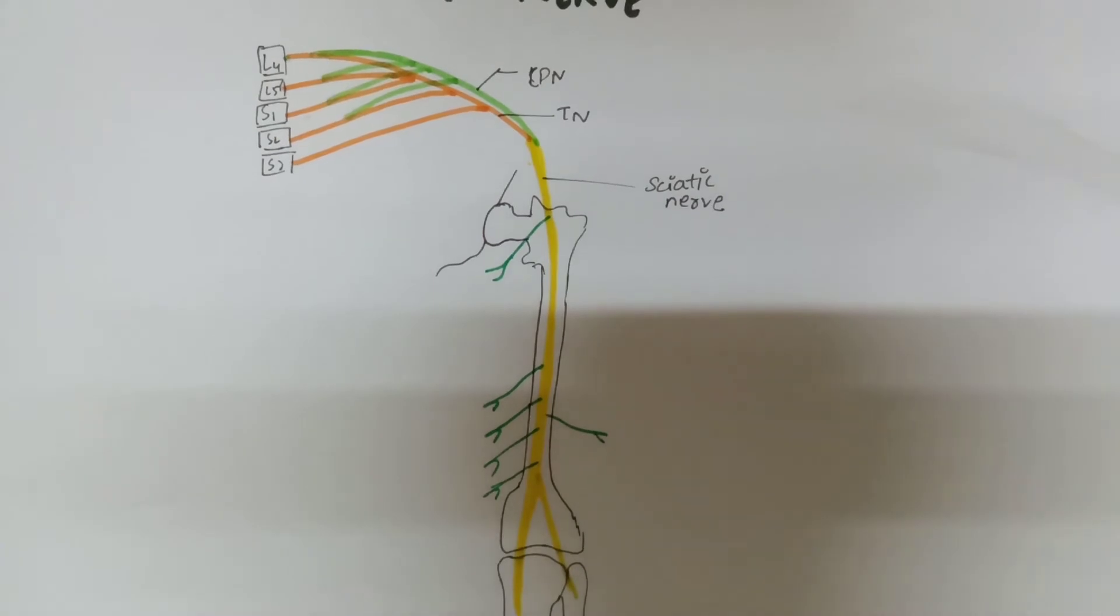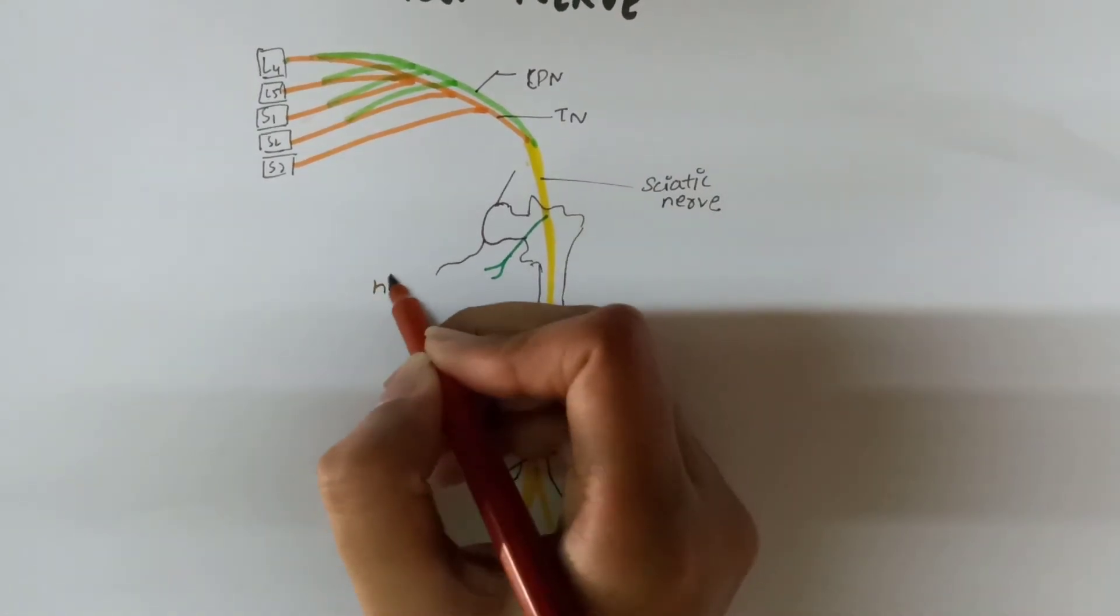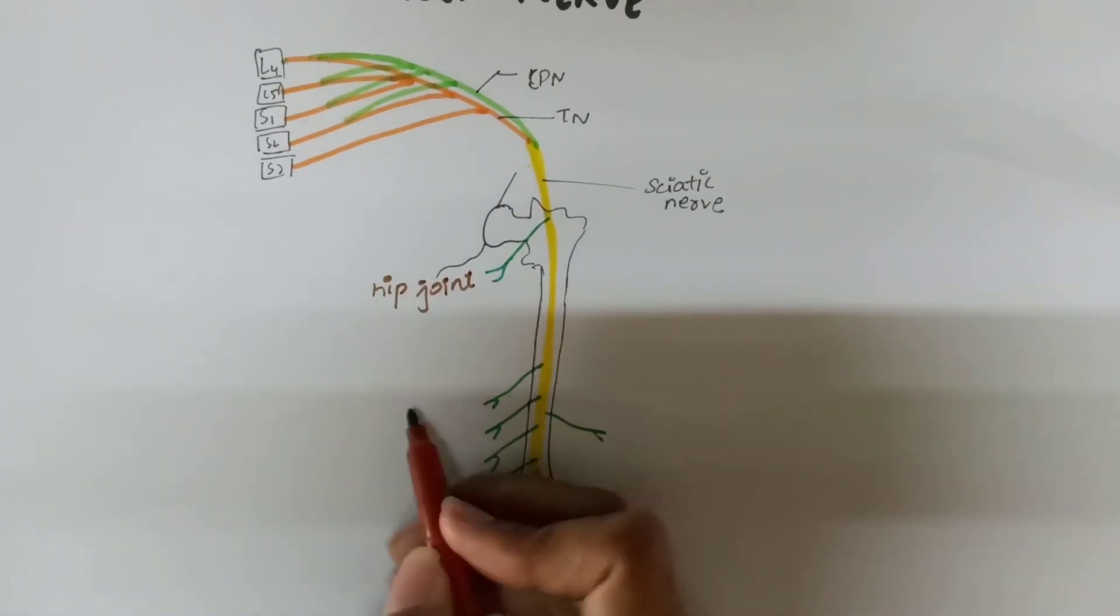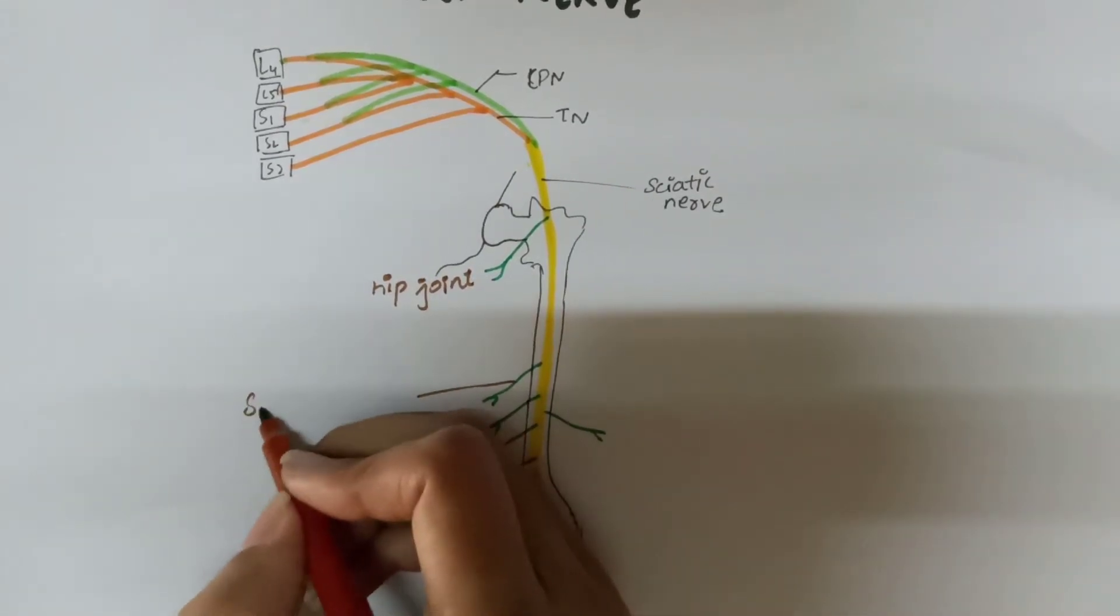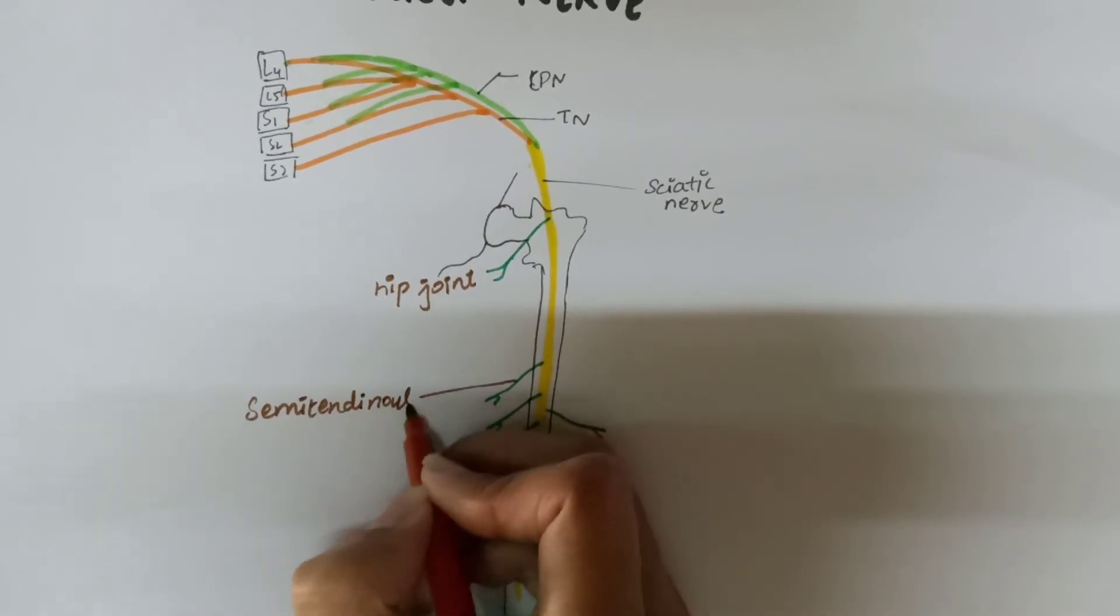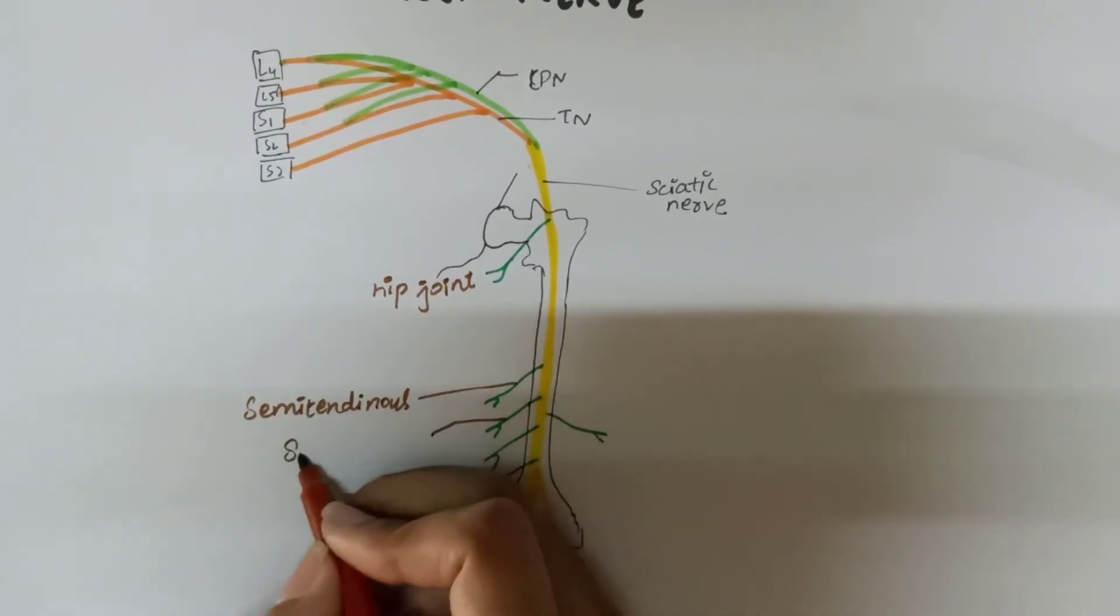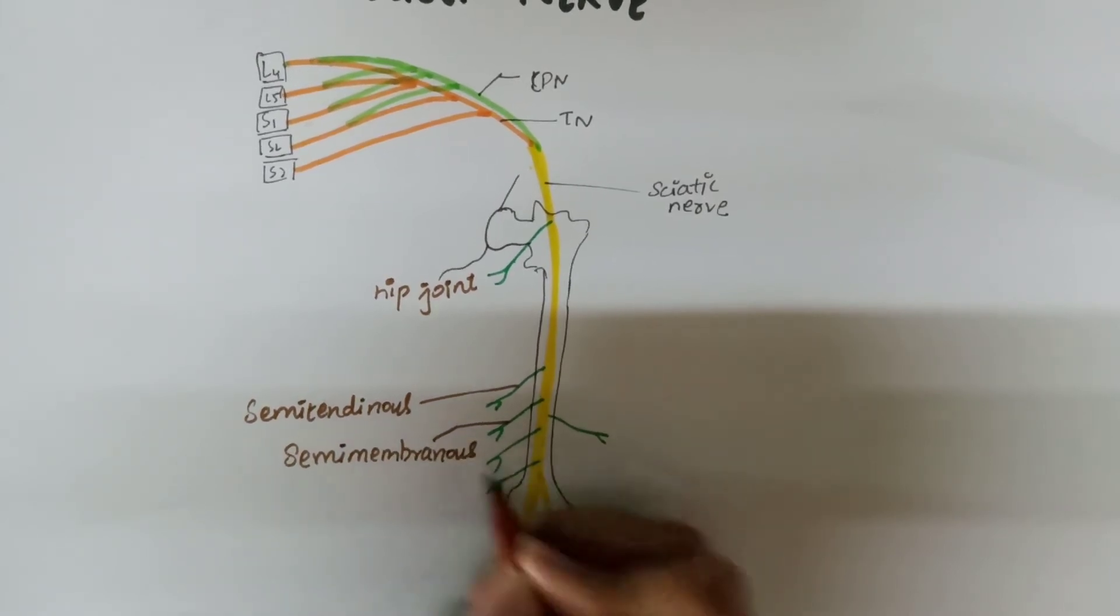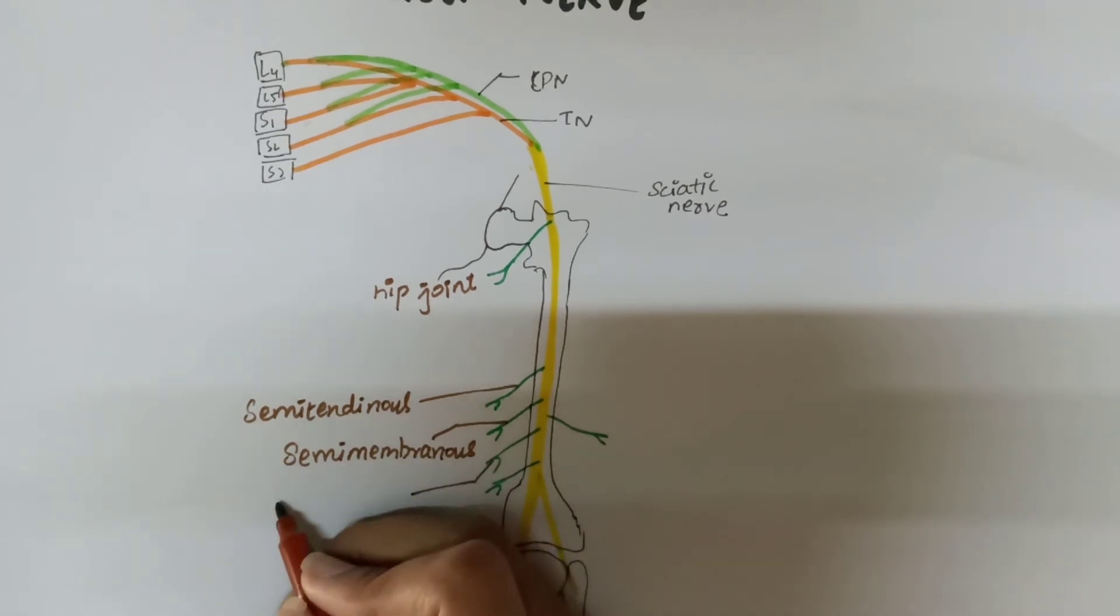First of all, the articular branch supplies to the hip joint. The first branch goes to semitendinosus, to semimembranosus, and to the long head of biceps femoris.